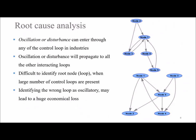In industries, we deal with many interacting control loops. Once the disturbance or oscillation enters through any one of the control loops, it propagates to all other interacting loops. Detecting the root cause in such scenarios is very cumbersome, especially when the number of loops is very large.